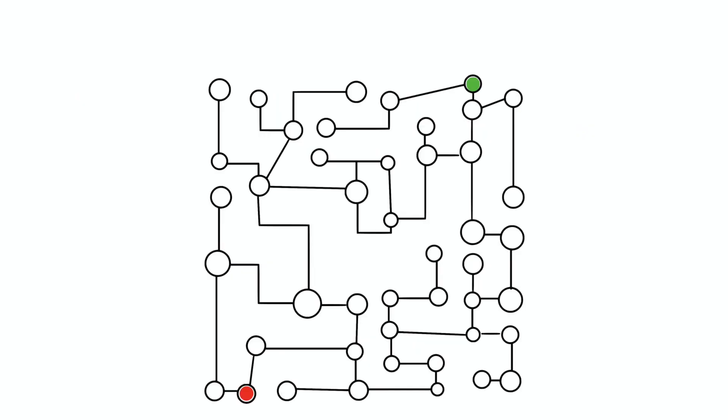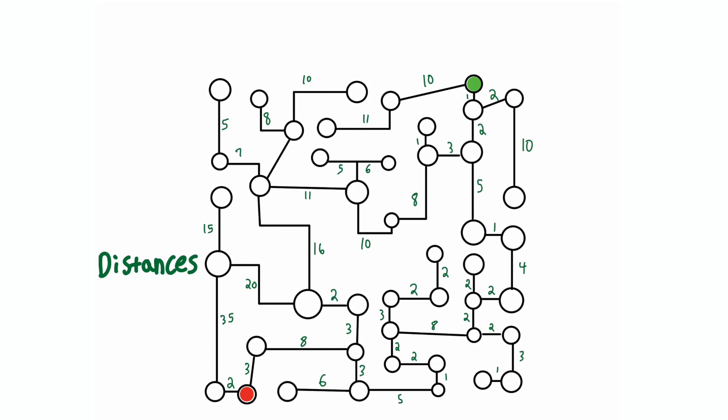Let's do an example. First, we add some distances to our graph. This represents how far the nodes are from each other. Let's also add some heuristics.